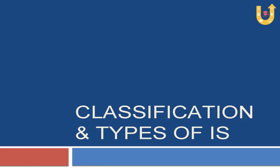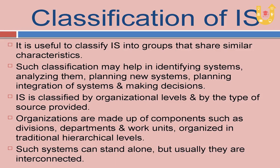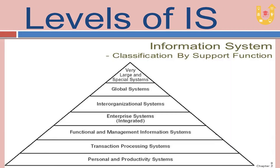We will begin with the classification of information systems, which may help in system identification, analysis, planning, and integration of new systems. IS is classified in seven levels, starting from personal and productivity systems and moving towards very large and special systems. Now we will understand each organizational level.